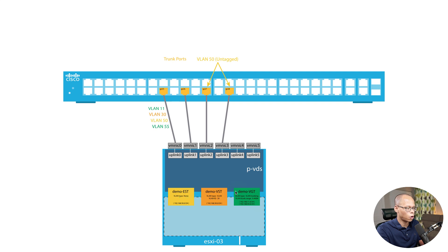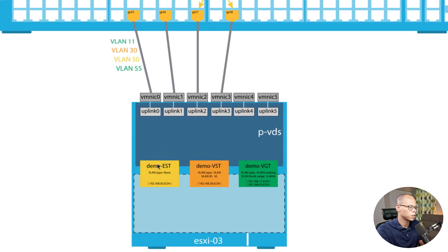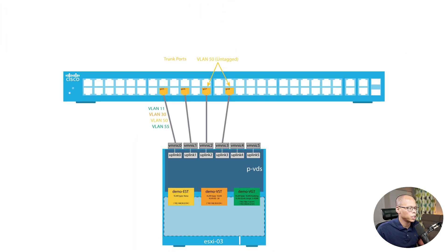All three port groups have subnets associated with them. Demo EST has 192.168.50.0/24, Demo VST has 192.168.30.0/24, and Demo VGT has 192.168.11.0/24 and 192.168.55.0/24. Demo EST is using uplink 3 as active and uplink 2 as standby. Demo VST is using uplink 2 as active and uplink 1 as standby. Demo VGT is using uplink 0 as active and uplink 1 as standby. A virtual router, vIOS, is attached to all three port groups.